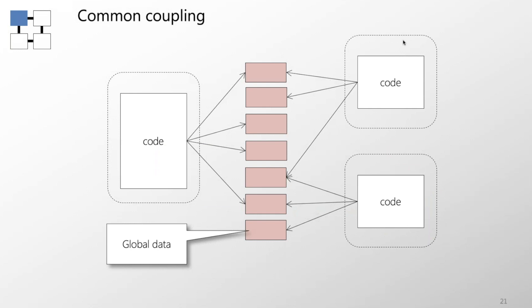Moving up a level to something still fairly bad: common coupling. This is where modules share global state information — all state is in a single place and all code shares all state information. Also known as global variables. This is why global variables are considered evil: they give you one of the highest forms of coupling achievable in a system.